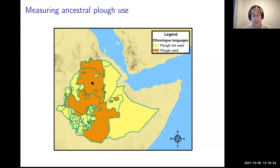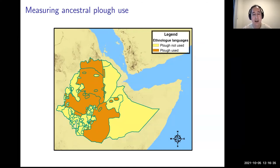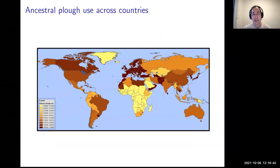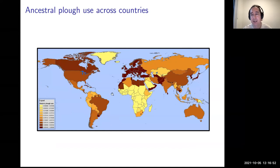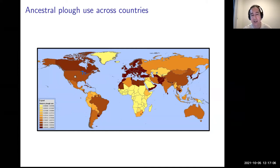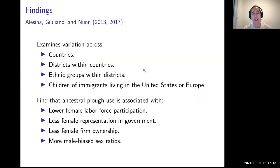We calculate the extent to which populations today in different parts of the world had ancestors who engaged in plow agriculture — done through language. In the US we would use English, then ask: did the English traditionally use plow agriculture? You see that in general they did. We then undertake analysis at many levels — countries, districts within countries, ethnic groups within districts, and even immigrants to the United States.